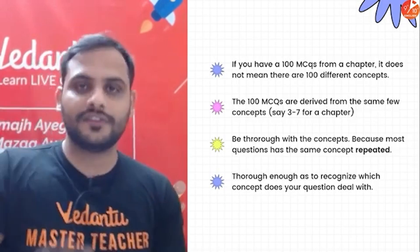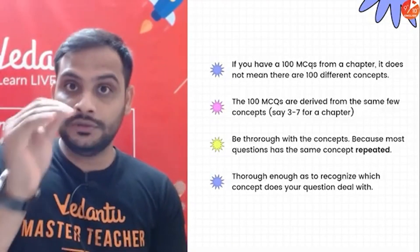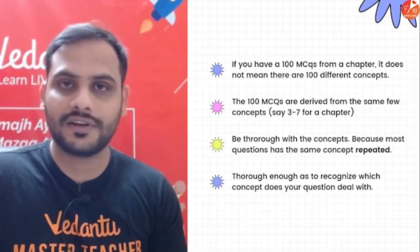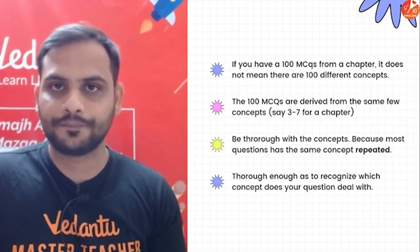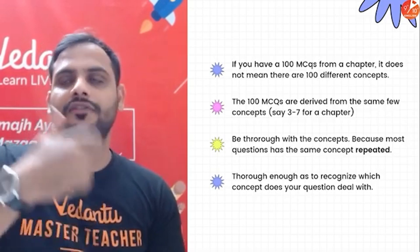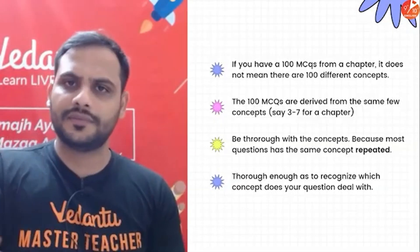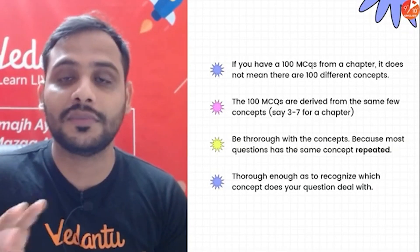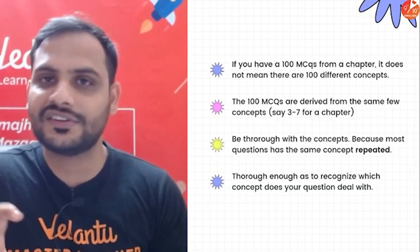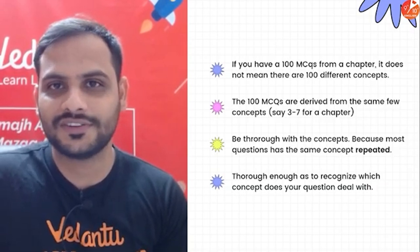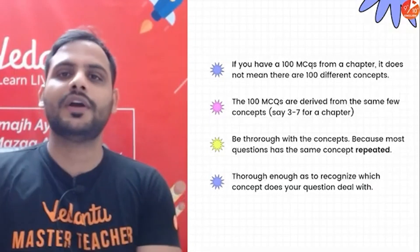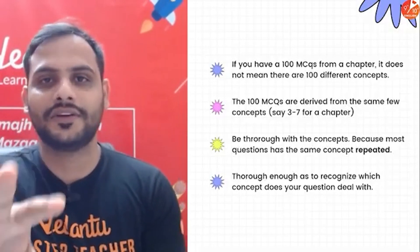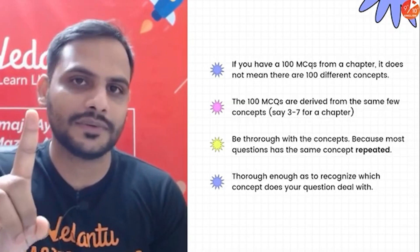Skip repeating questions and focus on new kinds of questions. This will make completing the syllabus much quicker, because solving 100 questions per chapter takes a lot of time. Focus more on your concepts — if a question repeats the same concept with just changing values, skip it. Try to solve different types of questions based on different concepts. Avoid solving the same type of question again and again just to feel good about it.